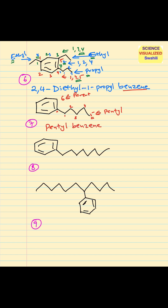Number eight — we see that now we have eight carbons in the side chain, while the ring has six carbons. So the eight-carbon chain becomes the parent — that will be octane. When benzene is a side group or substituent, we call it phenyl, sometimes abbreviated as Ph.